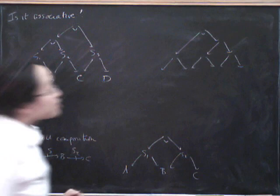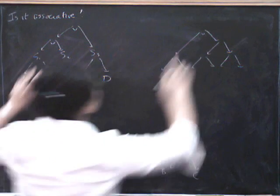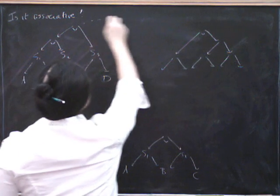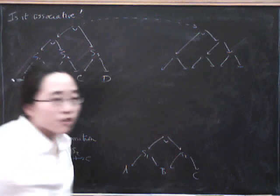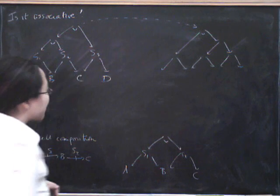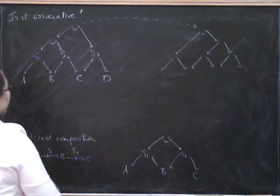Now those aren't going to be the same, but because of the universal property of pullbacks, there is going to be a canonical isomorphism that mediates between them and gives us an associator.